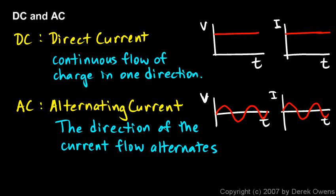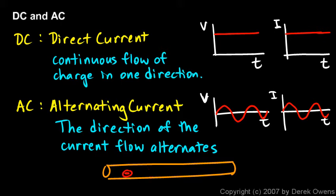So literally, if you have a piece of wire here, the electrons in the wire are moving through the wire in one direction, and then they all of a sudden stop and turn around and start heading back in the other direction.